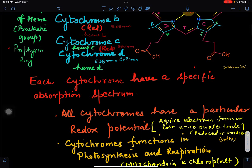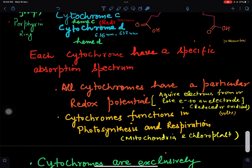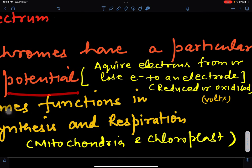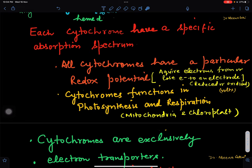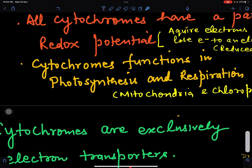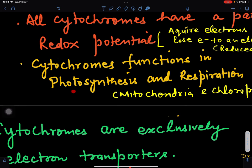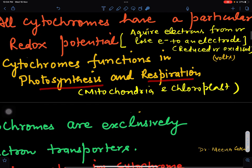Cytochromes have a particular redox potential — they are involved in reduction and oxidation reactions. They can acquire electrons from or lose electrons to an electrode, and may be present in a reduced or oxidized state. We can measure this redox potential in the form of volts. Cytochromes are mainly involved in electron transfer phenomena and are involved in the major metabolic processes of photosynthesis and respiration, so they are found in cell organelles — mitochondria and chloroplasts.